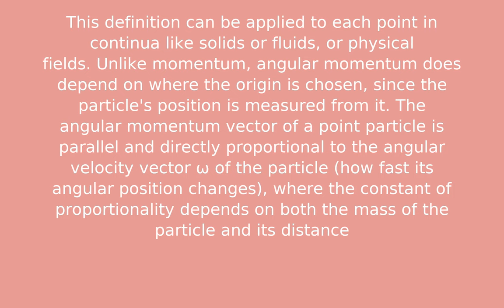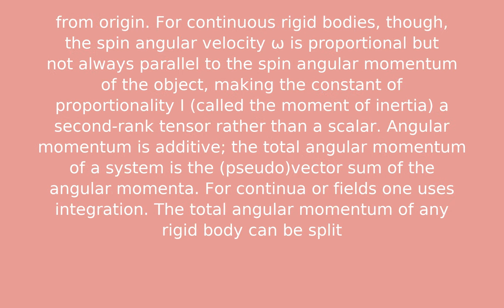Unlike momentum, angular momentum does depend on where the origin is chosen, since the particle's position is measured from it. The angular momentum vector of a point particle is parallel and directly proportional to the angular velocity vector omega of the particle, where the constant of proportionality depends on both the mass of the particle and its distance from the origin.